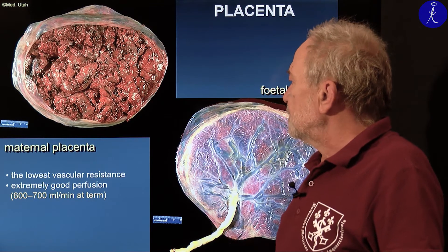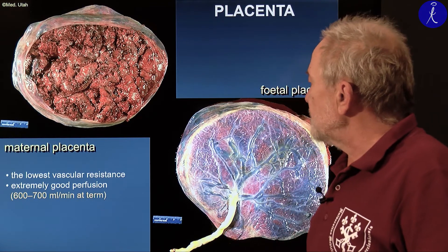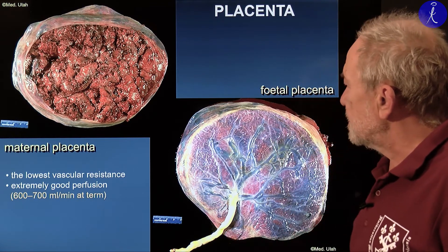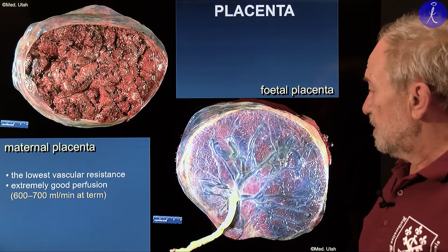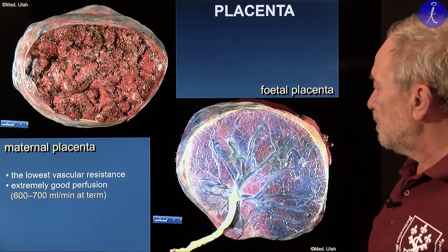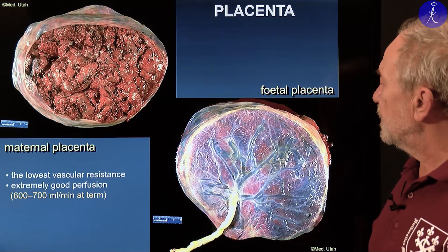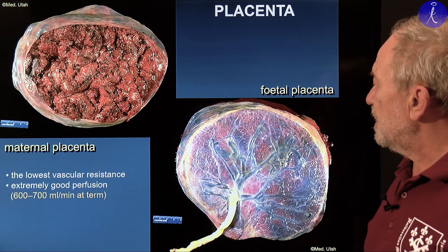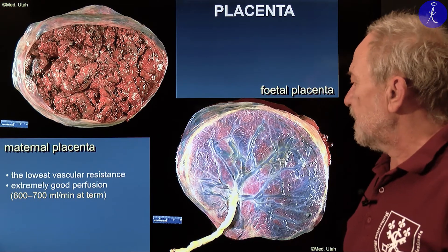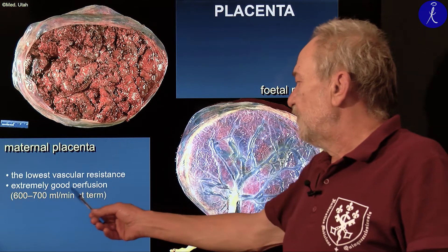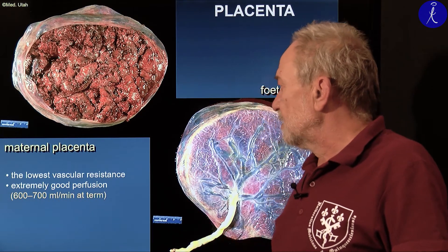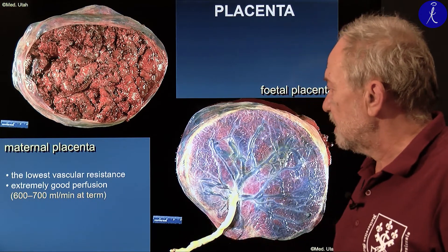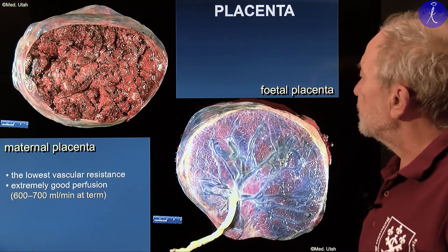The vascularization is extremely rich, just to ensure good supply for the growing baby — extremely good perfusion, something like what the lung has.